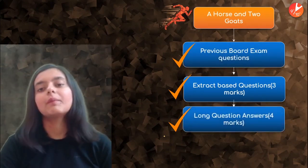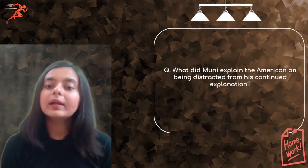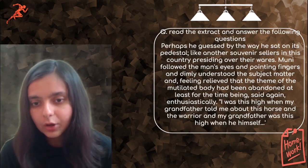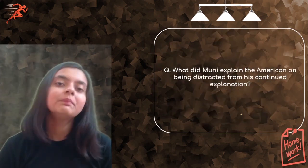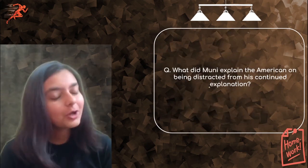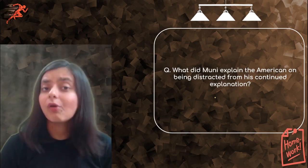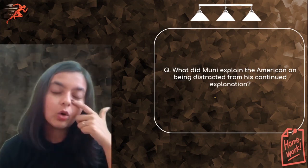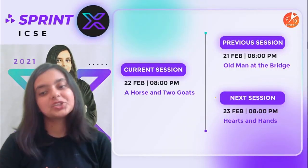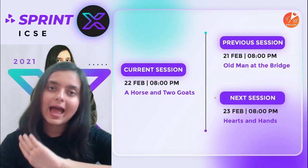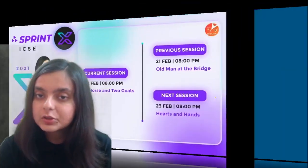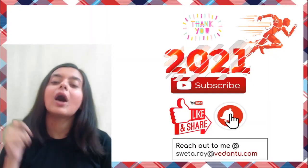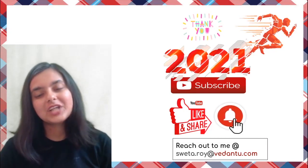With that, we've completed the three-mark and four-mark questions from this chapter. Here is your homework question: what did Muni explain to the American on being distracted from his continued explanation? Please write your homework answer in the comment section. If you haven't watched the whole explanation in the Umang series, please do watch it. The next session will be on 'Hearts and Hands.' Till then, take care, do not miss the next session, visit the link in the description box, use the coupon code SWREPRO, hit the like button, share the video, and subscribe to the channel. Bye bye!